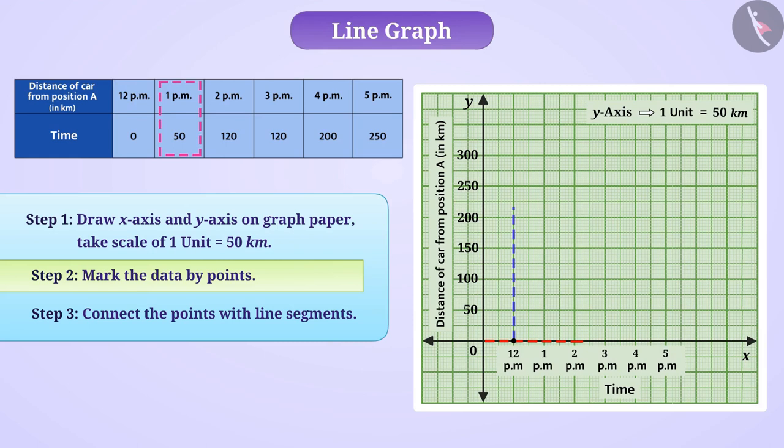Similarly, at 1 o'clock in the afternoon, the distance of the car from position A is 50 kilometers. So, we will mark the point at the intersection of the y-axis and 1 o'clock in the afternoon at the horizontal line representing 50 kilometers.